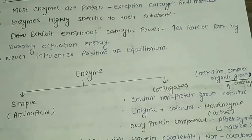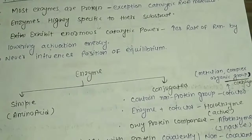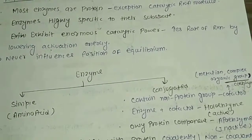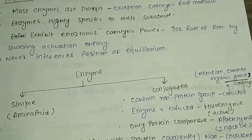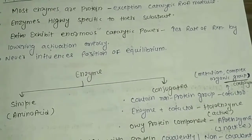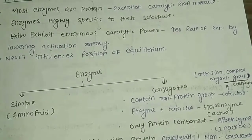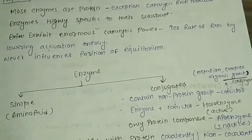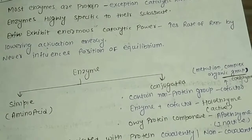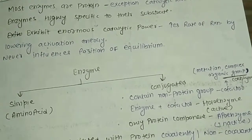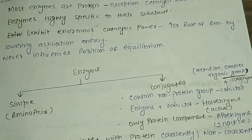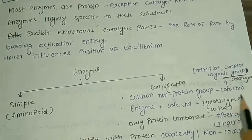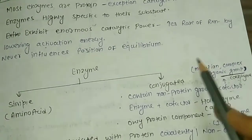Now let's talk about enzyme classification. Enzymes are classified into two classes: simple and conjugated. Conjugated enzymes contain a non-protein group, which we call cofactors. Cofactors are of two types.